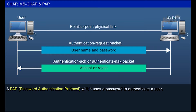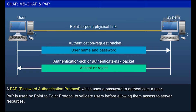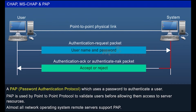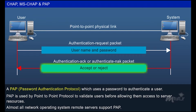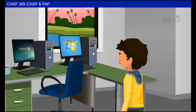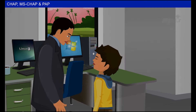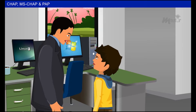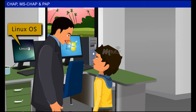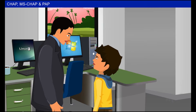PAP uses a password to authenticate a user. It is used by Point-to-Point Protocol to validate users before allowing them access to server resources. Almost all network operating system remote servers support PAP. Monty noticed the two systems had different interfaces. Sendal explained that the current system has Windows OS and the previous system has Linux OS, and that Windows has its own user authentication protocol called MS-CHAP — Microsoft CHAP.